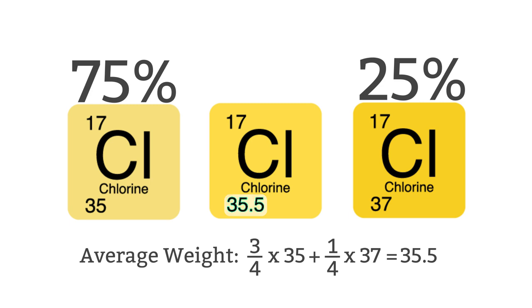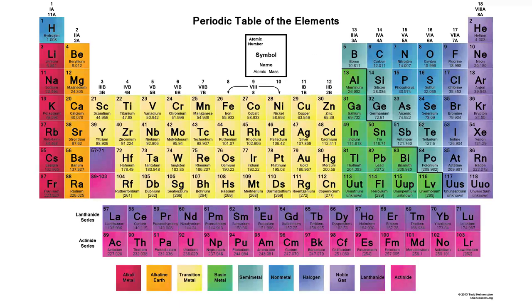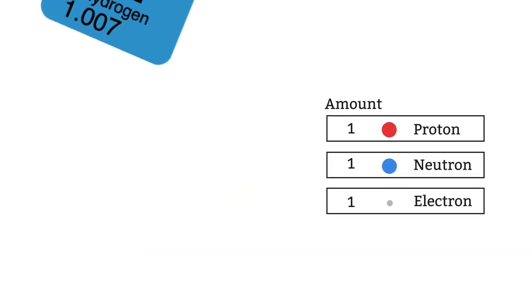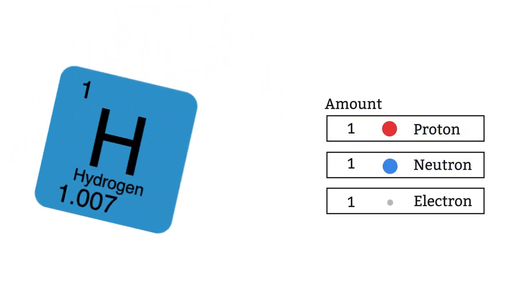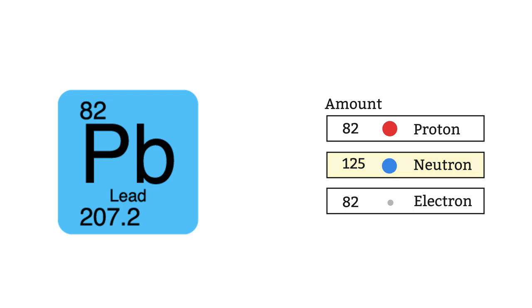Look at the periodic table. Which elements have mass numbers that are not whole values? The lighter elements have roughly the same number of neutrons as protons, but heavier elements tend to have more neutrons to glue the nucleus together.